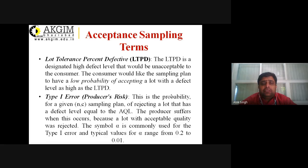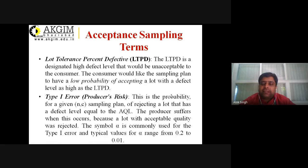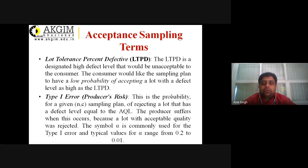Type 1 error is the producer's risk. N denotes the number of samples taken and c is the number of defective items. The Type 1 error is the probability, for a given N and c sampling plan, of rejecting a lot that has a defect level equal to the AQL. The producer suffers when this occurs because a lot of acceptable quality was rejected. The symbol alpha is commonly used for the Type 1 error, and typical values for alpha range from 0.01 to 0.2.